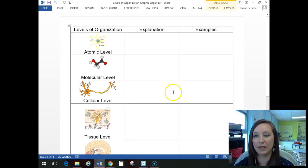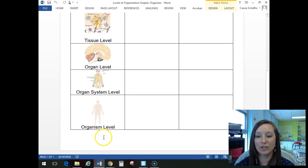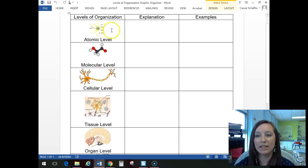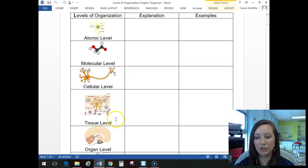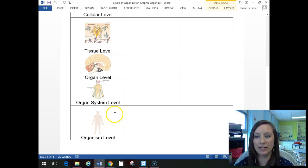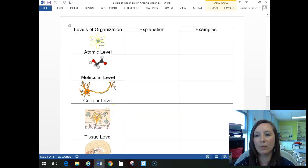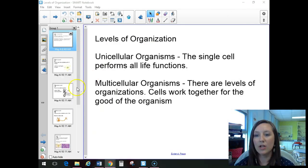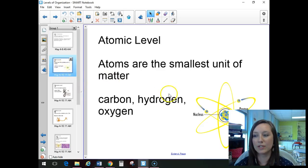When we look at that graphic organizer, you can see we're going to start at the smallest and work our way up to the largest level. So we have the atomic level, the molecular level, cellular, tissue, organ, organ system, and organism. We're going to work our way through and talk about what each one of those levels mean. Get this section down in your notes, and then once you're ready, come on back, and we're going to start talking about the first level, which is our atomic level.